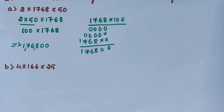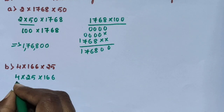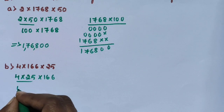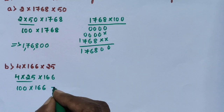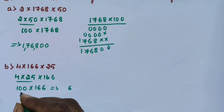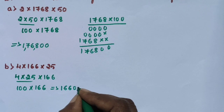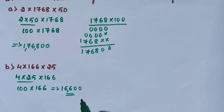Using the same process, rearrange the numbers and multiply these 3 numbers: 4 into 25 into 166. First, multiply 4 into 25, which is 100, then 100 into 166. Multiply 100 into 166: result is 16600. The answer is 16600.